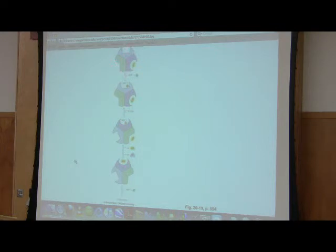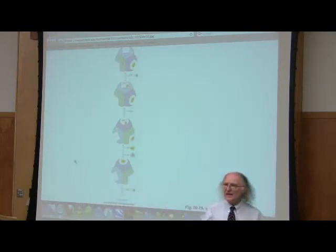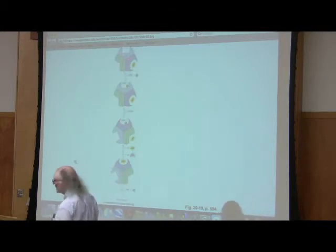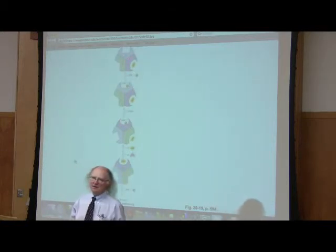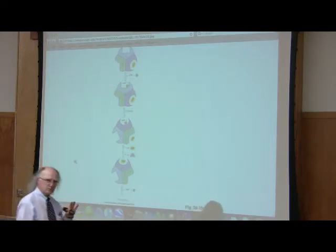The subunits have three possible configurations. They're called L, T, and O. At any given time, the mushroom is arranged, so one of the subunits is in L, one of the subunits is in T, and one of the subunits is in O. You want to know what those stand for? O stands for open, L stands for loose, and T stands for tight. O, L, T, open, loose, tight.